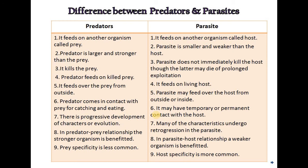There is a difference between predators and parasites. First, a predator feeds on another organism called prey, while a parasite feeds on another organism called a host. Second, a predator is larger and stronger than the prey, while a parasite is smaller and weaker than its host. Third, a predator kills the prey, while a parasite does not immediately kill the host, though the host may die of prolonged exploitation.